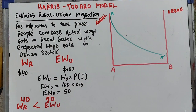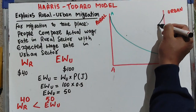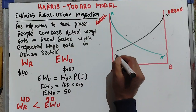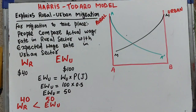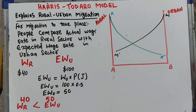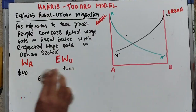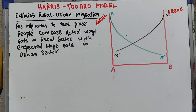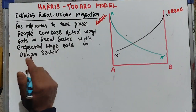Likewise, we draw another curve MM prime, which is the labor demand curve in the manufacturing sector — that is, the urban sector. At equilibrium, the condition is that the actual wage rate in the rural sector should be equal to the expected wage rate in the urban sector.